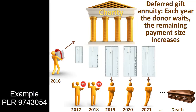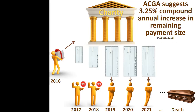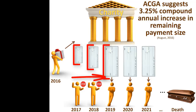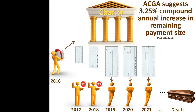For an example, see PLR 9743-054. The essence of a deferred charitable gift annuity is that if the donor postpones the start of the annuity payments, each remaining payment will become larger. The American Council on Gift Annuities suggests a compounding rate which incorporates current interest rates and the reduced longevity of the annuitant. If a compounding rate is so high that it increases the overall value of the annuity beyond the simple immediate annuity, it will reduce the available tax deduction. For example, in 2016, the payout rate would be the current rate in effect at the age the payout begins, multiplied by 1.0325 raised to the power of n, where n is the number of years the payout was delayed after the initial gift. In other words, this is a 3.25% compound annual increase in the remaining payment size.